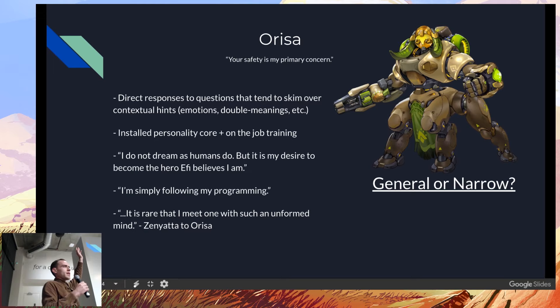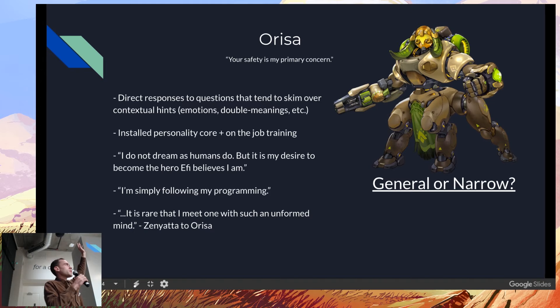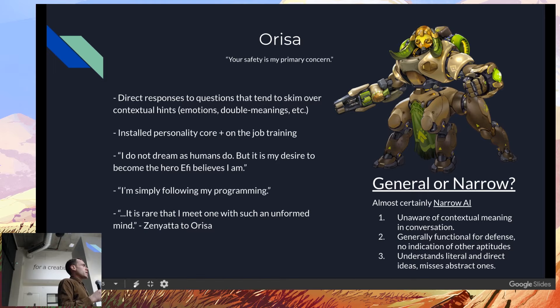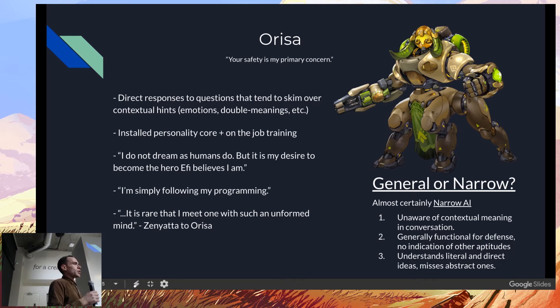I'm going to agree with you — I'd say Orisa is almost certainly narrowly intelligent. We can see this because she's good at one specific kind of task, which is defense and defending the city. You see not a very wide scope of things that Orisa is interested in, and we also see a lot of missing of double meanings in conversations. You'll watch conversations with Doomfist — he's being aggressive and doing the Doomfist thing — and she's just like 'okay.' Maybe that's apathy, maybe it's not understanding. But this is not something you'd expect of something that is generally intelligent.